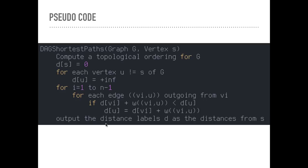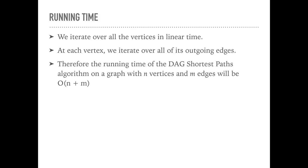A common mistake here is to say, we have a nested for loop. This iterates over all the vertices, this iterates over all the edges, so it's probably n times m. But you have to notice that we're not iterating over all of the edges in this nested for loop. We're only iterating over the outgoing edges of that specific vertex. That's how we iterate over all of the edges and all of the vertices in linear time.